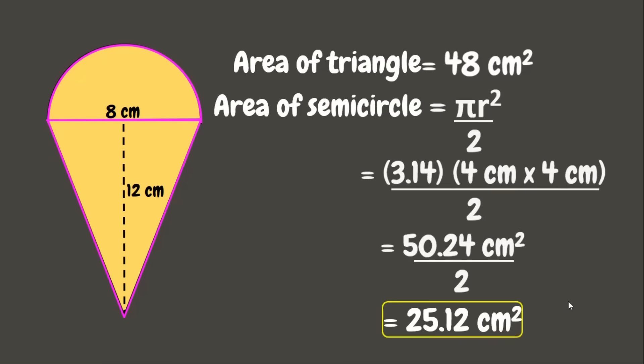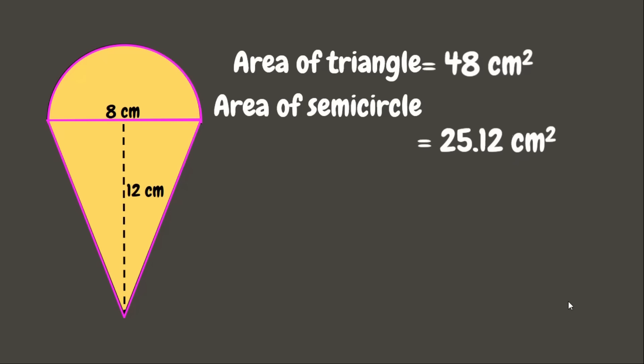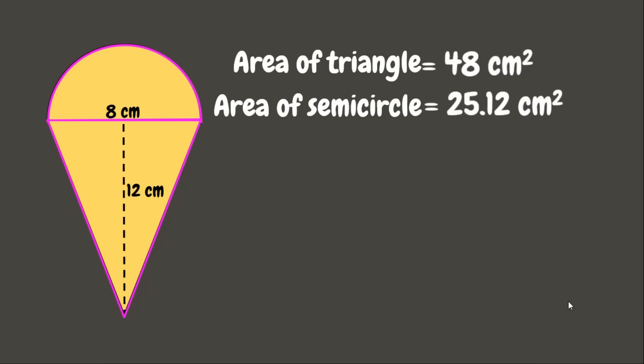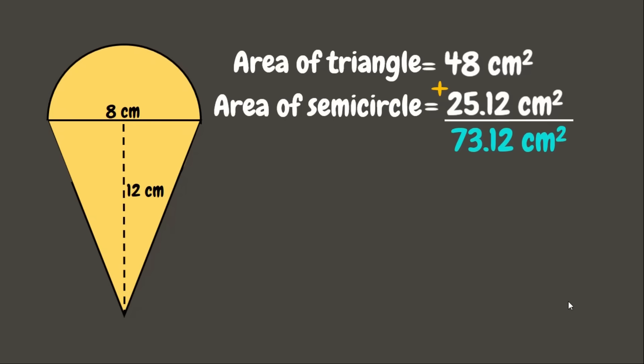Now we combine the two areas together by adding them. 48 square centimeters plus 25.12 square centimeters equals 73.12 square centimeters. That is the total area of this composite figure.